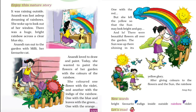Anandi ran out to the garden with Millie, her favorite cat. Ran out means to run outside, and she ran to the garden. Millie is the name of her favorite cat. Anandi loved to draw and paint. Today she wanted to paint the flowers of her garden with the colors of the rainbow.